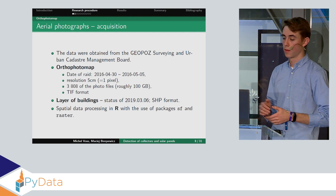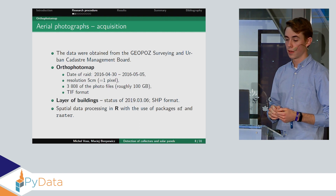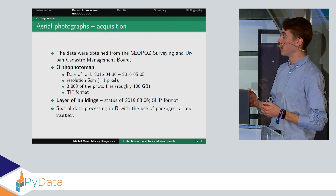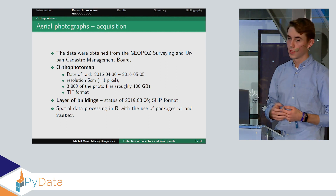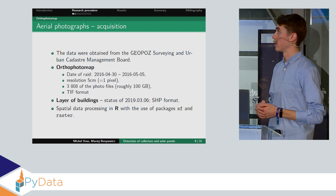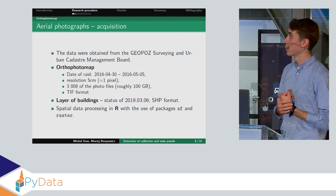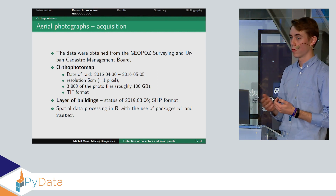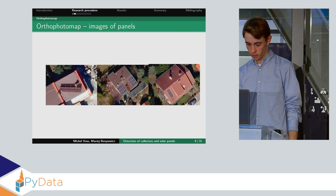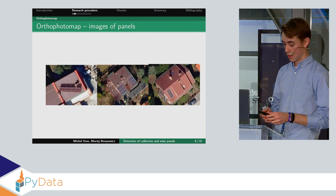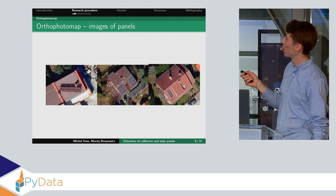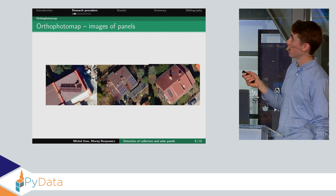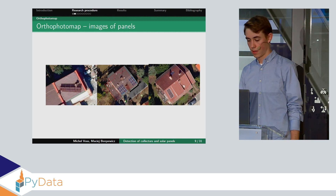We also requested the layer of buildings, because the images were just images without building information. So we didn't know where the buildings, parking, or churches were. The spatial data processing was done in R, so it's also possible to conduct projects in two programming languages. Here's an example of how it looks — the building layer shown as a red area. As you can see, it's not a perfect fit, so that was a problem I'll talk about later.